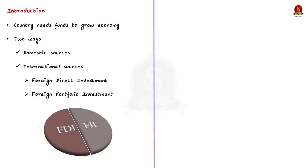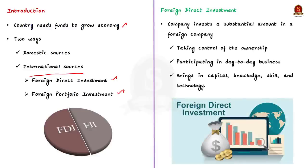A country needs funds to grow its economy. While approaching domestic sources is one way, approaching international sources is another. There are two ways a country can get capital through international sources: foreign direct investment (FDI) and foreign portfolio investment (FPI). Though they sound similar, they are poles apart. Foreign direct investment is when a company invests a substantial amount in a foreign company by taking control of the ownership and participating in the company's day-to-day business. In FDI, along with capital, the company brings in knowledge, skill, and technical know-how, hence holding a good amount of control in decision-making.